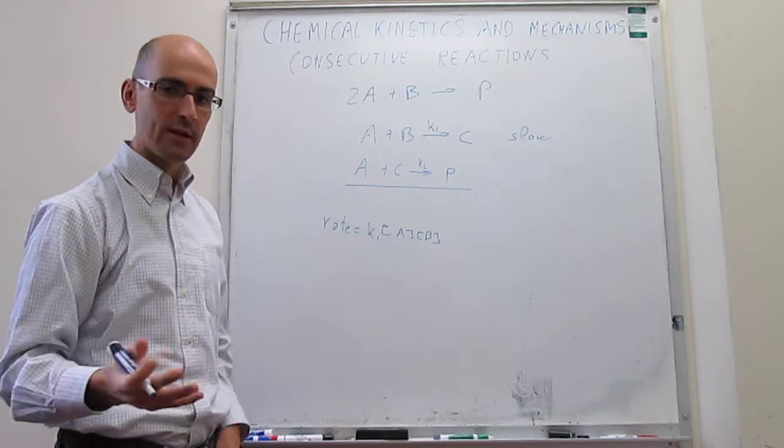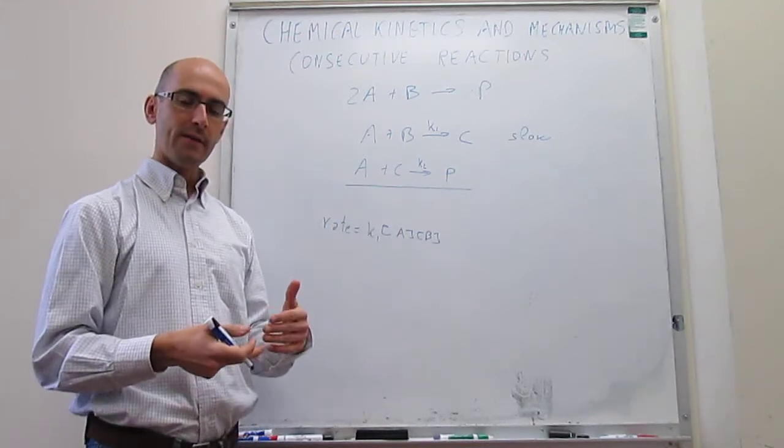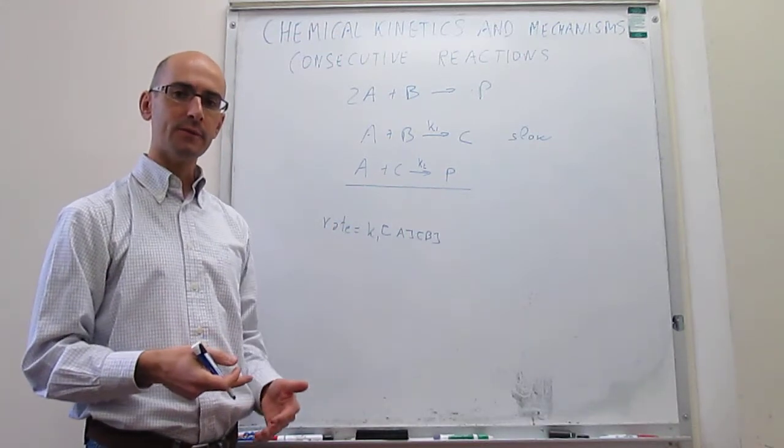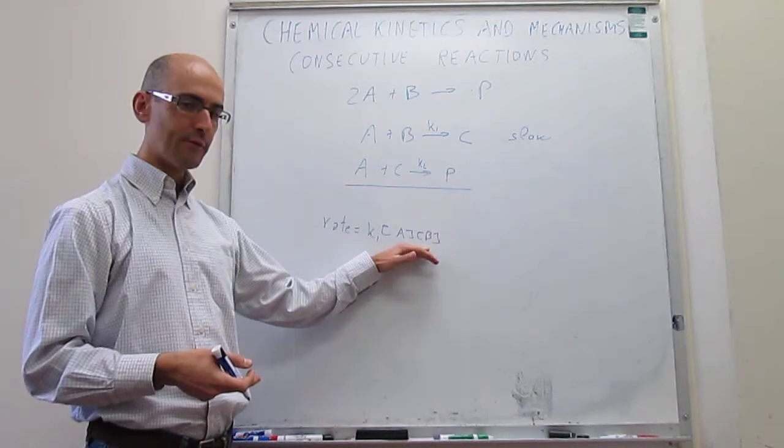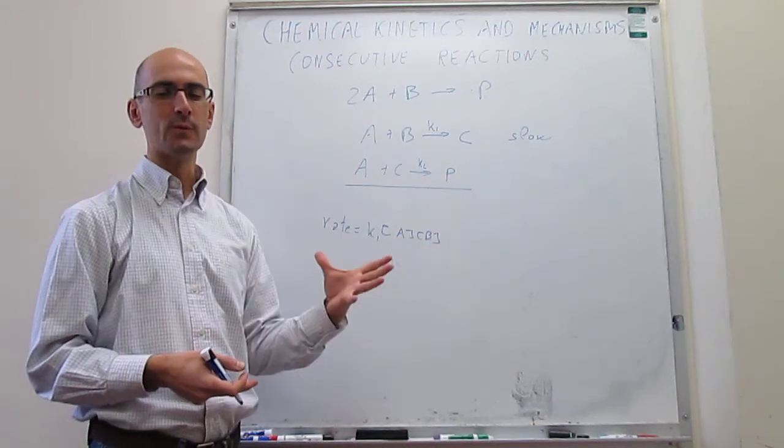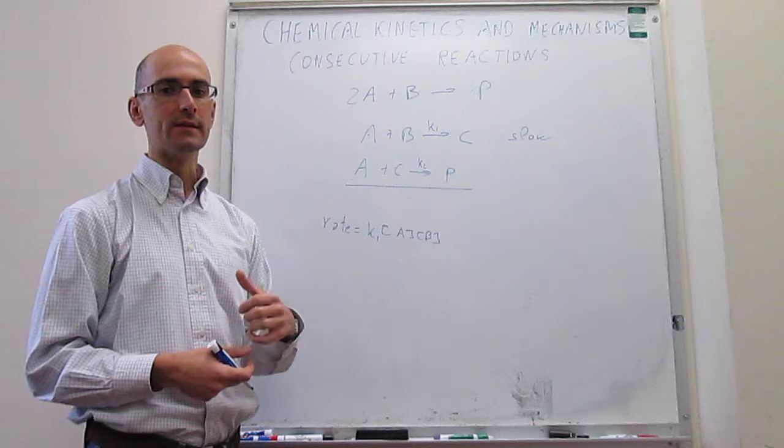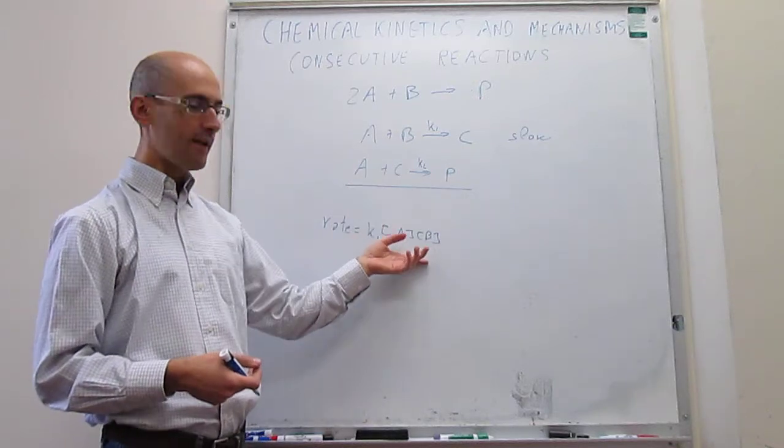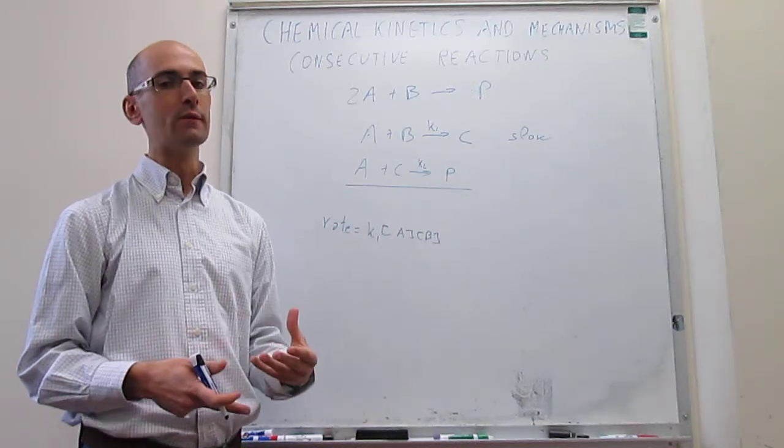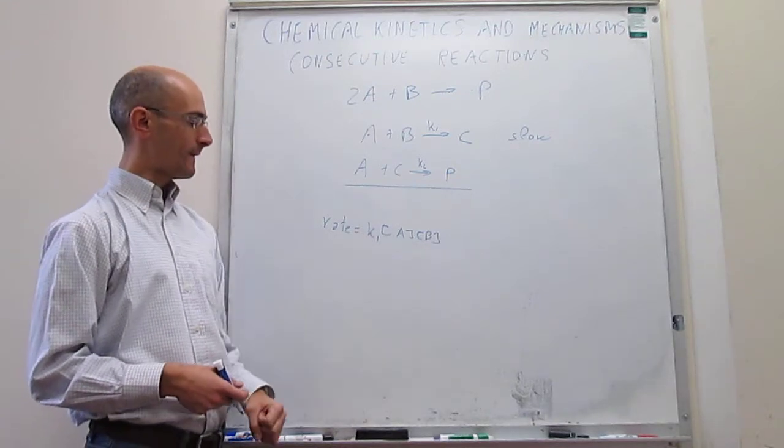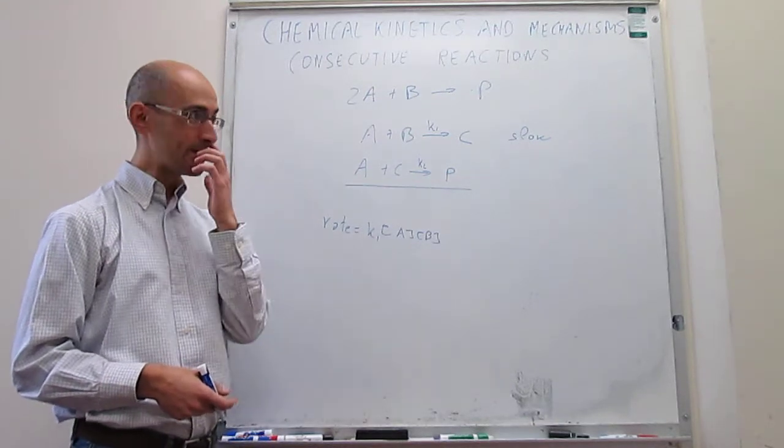Notice that it looks like here we're neglecting the second step. But that second step is going to be so fast compared to the first one that the first step is solely going to determine the rate. That is what the rate determining step means. You take the slow step and that is the one that is going to be responsible for the overall rate of the reaction.